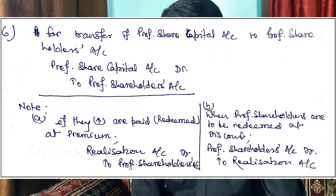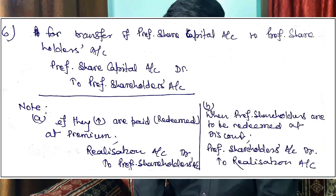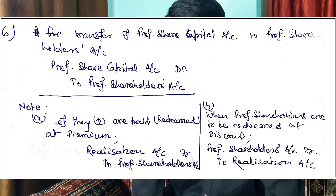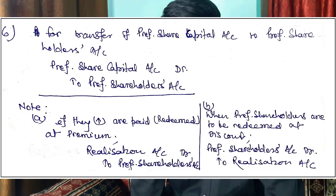Journal entry number six is for transfer of preference share capital to Preference Shareholders Account: Preference Share Capital Account debit, to Preference Shareholders Account.